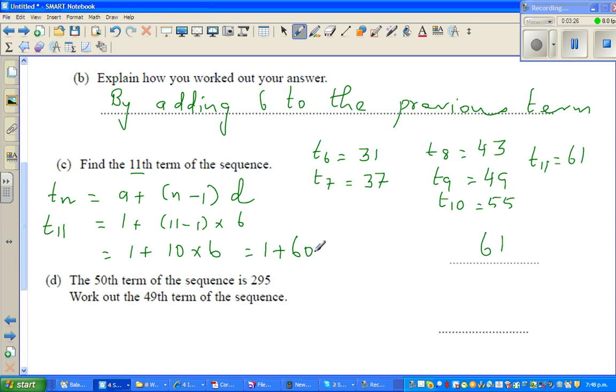You don't need to do like this. Suppose if someone is asking you what is, say, T21, T21 would be 1 plus 21 minus 1 times 6, which is 1 plus 20 times 6. This is 120, which is 121.